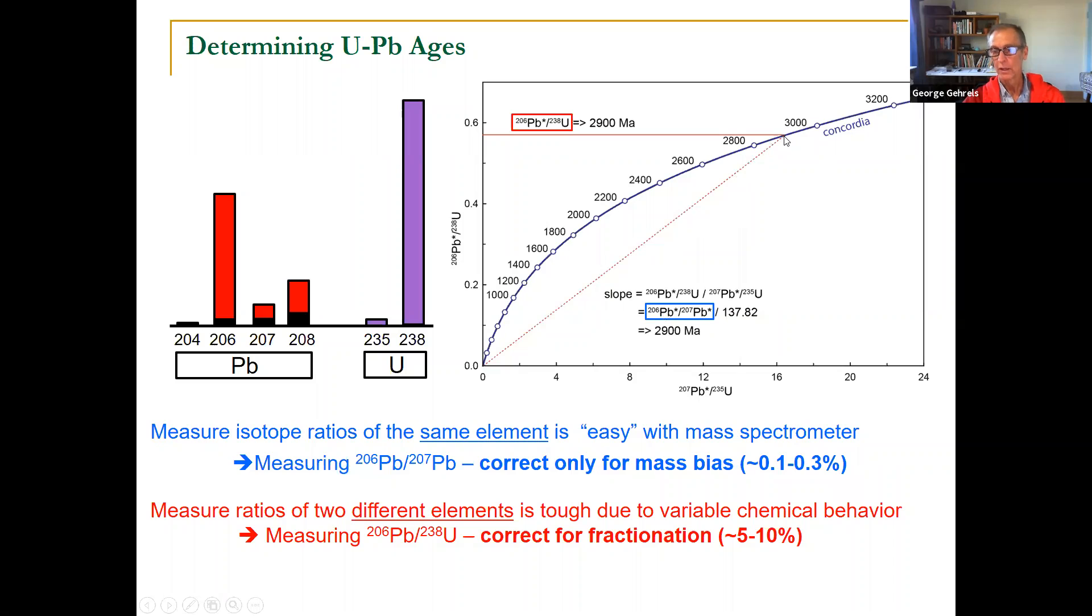So your analysis is right here, if you're lucky, right on Concordia. You know the age is 2.9 billion years old. Good news.